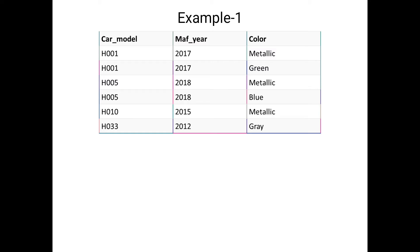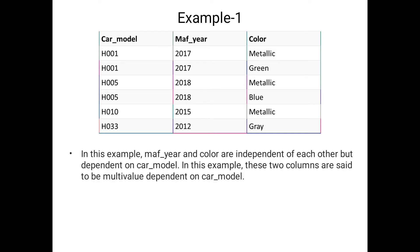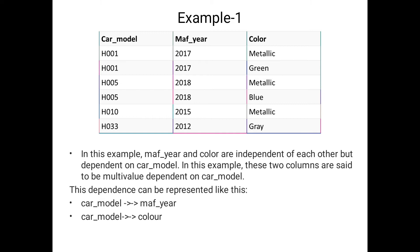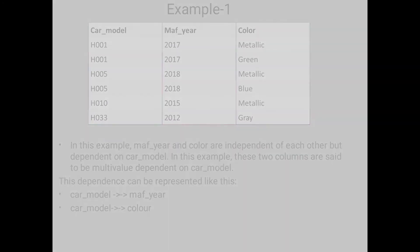For the example we consider three fields: car model, manufacturing gear, and color. For every car model the company releases two colors. Manufacturing gear and color are independent of each other, but both are dependent on the car model. So we decompose the table: car model implies manufacturing gear, and car model implies color — denoted using the double arrow.